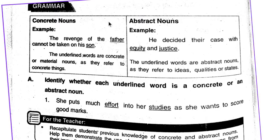Concrete and Abstract Nouns. First of all, you should know what is a concrete noun. A concrete noun, or material noun, is a noun which refers to concrete things — things you can touch, which are visible and physical. For example, a rock, a book.